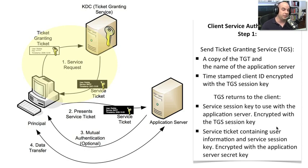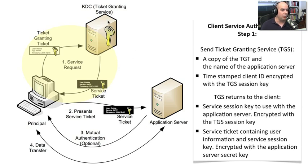If the information we provided to the Ticket Granting Service looks good, we receive two things back. First, a service session key to use with the application server, encrypted with our session key so we can read it. Second, a service ticket containing user information and session key information, encrypted with the application server's private secret key — a key known only to the KDC and the application server. We have no access to that private key, so we cannot decrypt or see inside that ticket. It stays protected until we hand it to the application server.